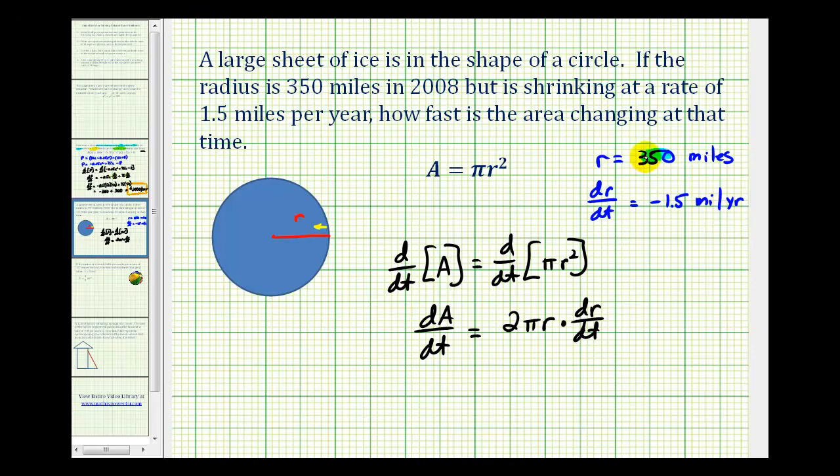So we'll substitute 350 for r and substitute negative 1.5 for dr/dt. And this will tell us the rate of change of the area.